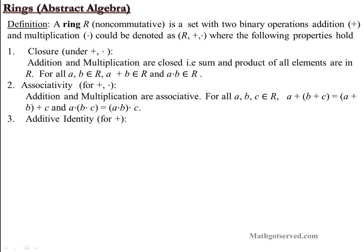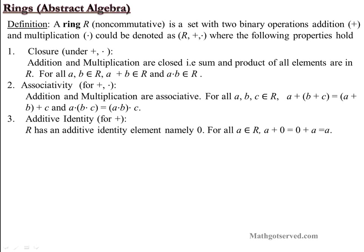The next condition is additive identity — for addition only. A set R is a ring if it has an additive identity element. If you take an element from a set and carry out an operation with that identity, you end up with the original element. With rings, you have an additive identity, namely 0, so that when you add 0 to an element from the ring you end up with what you started with. For all A in R: A plus 0 equals 0 plus A.